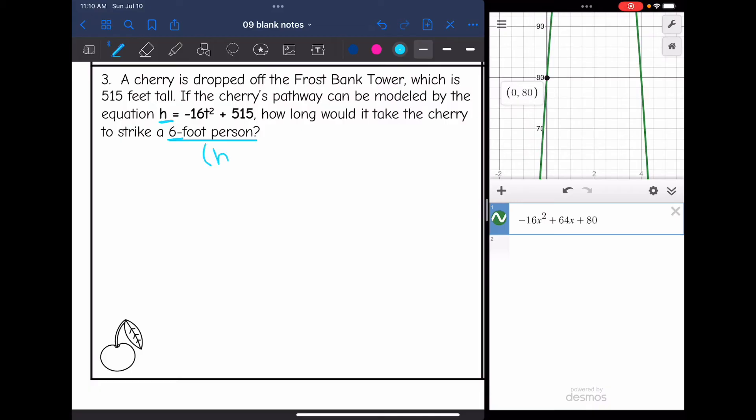They gave us an h value. So I'm going to substitute in 6 for h, and I get 6 = -16t² + 515. They want us to find the t value whenever h is 6.